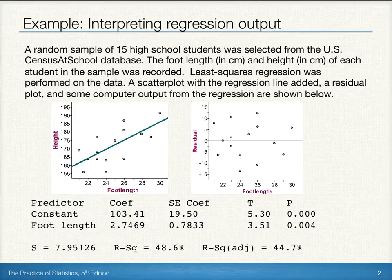The foot length and height of each student in the sample was recorded in centimeters. Least squares regression was then performed on the data, and a scatter plot with regression line added, a residual plot, and some computer output from the regression are all shown below. In this example, we'll take a look at how to interpret that computer output at the bottom of the screen.